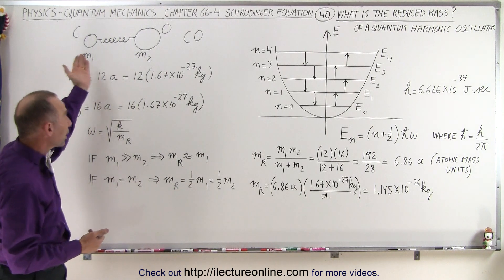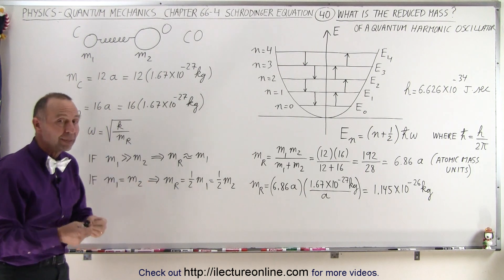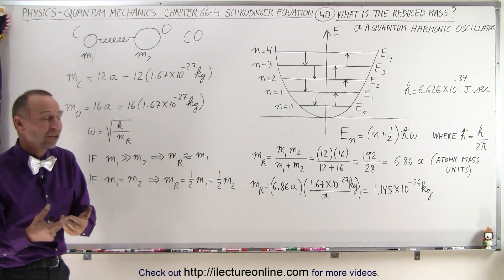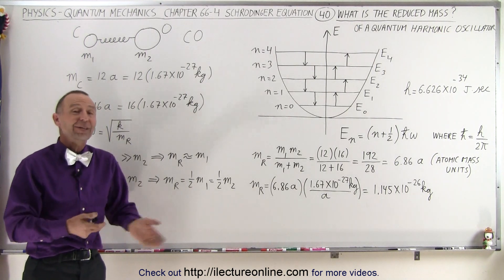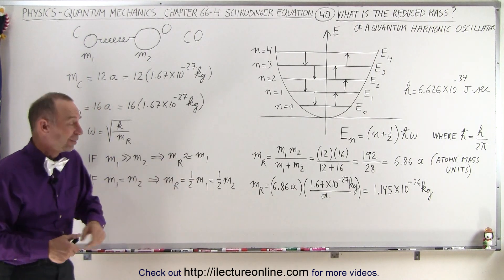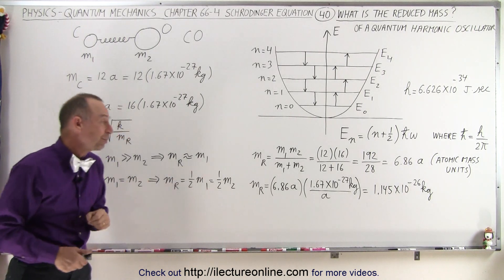For example, if this was diatomic oxygen, then the reduced mass would be half the mass of an oxygen atom. Well, there's only one type, so yes, it would be half the mass of an oxygen atom, because the two masses would be equal.